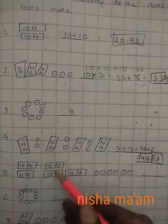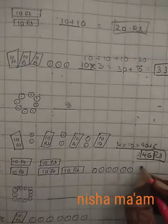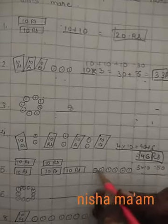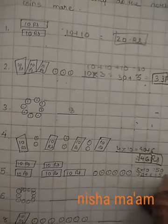Okay? Now let's see the next one. 1, 2, 3, 4, 5 notes, so what will this be? 5 times 10 equal to 50. And 1, 2, 3, 4, 5, 6 coins. 50 plus 6 equal to 56 rupees.